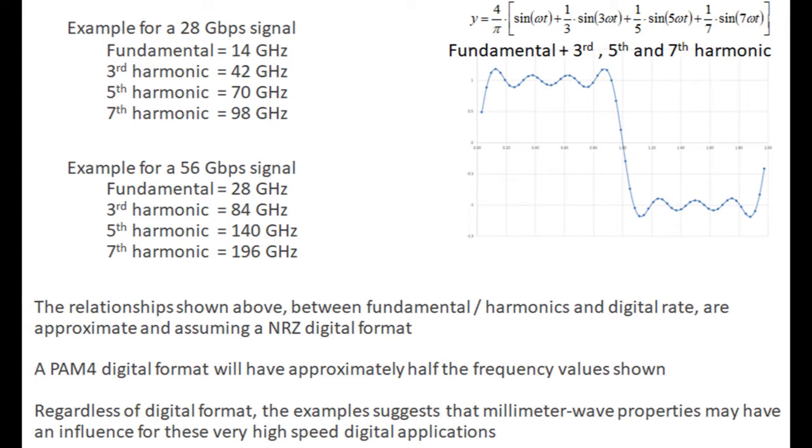And in the case of 28 gigabits per second, the fundamental frequency is 14 GHz. The 3rd harmonic is 42 GHz, which is in the millimeter wave range of frequencies. 5th harmonic, 70, and the 7th harmonic, 98 GHz, all of which are in the millimeter wave range of frequencies, which means these concepts of millimeter wave and how spurious modes and other things need to be considered can affect these waves.